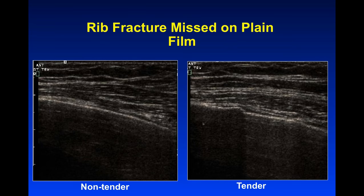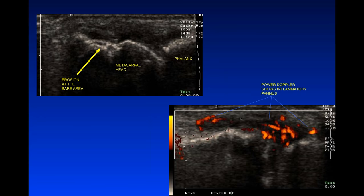Ultrasound is about three times more sensitive than x-ray for rib fractures. This is a woman with lupus on steroids who was shoveling snow and felt chest pain. The ER ruled out MI and pulmonary embolism, did a rib series that was negative, and she was about to embark on an extensive workup. Someone had the idea to look with ultrasound — a non-tender rib looks normal, but a tender rib shows a crack right there, a non-displaced fracture. She actually had four rib fractures, two on each side. You don't necessarily do anything differently for rib fractures, but it stopped an extensive workup and she was appropriately reassured. Similarly, ultrasound sees about three times as many rheumatic erosions as x-ray. A patient with rheumatoid arthritis had deep erosions on the neck of the metacarpal with lots of flow in thick synovium, yet her x-ray was read as essentially normal.